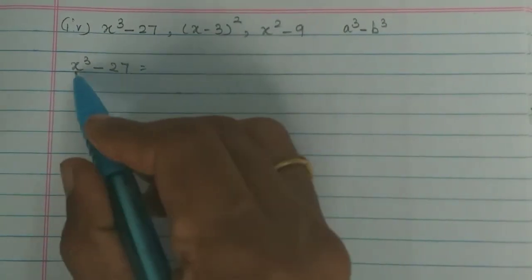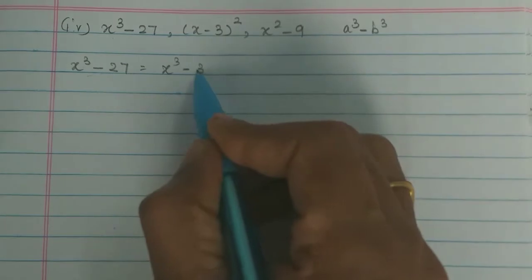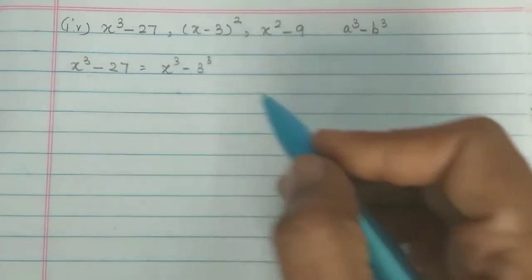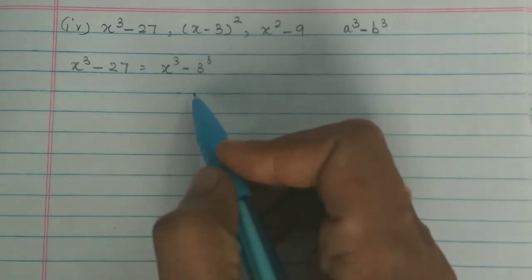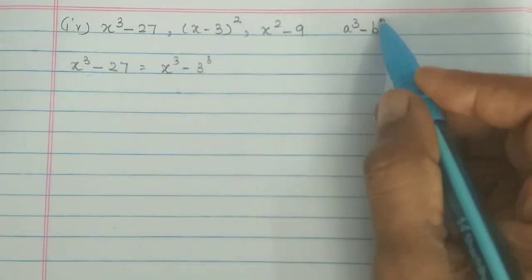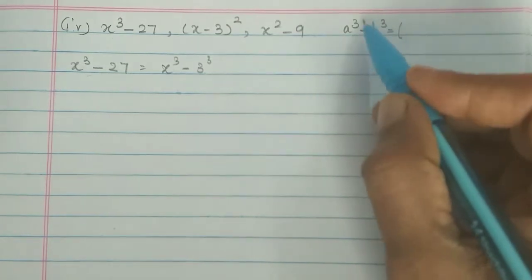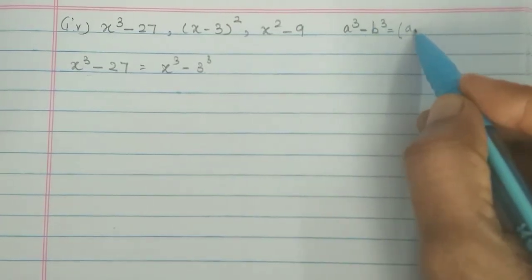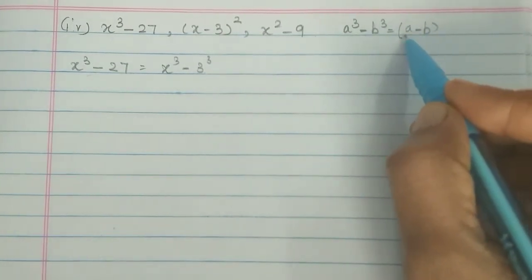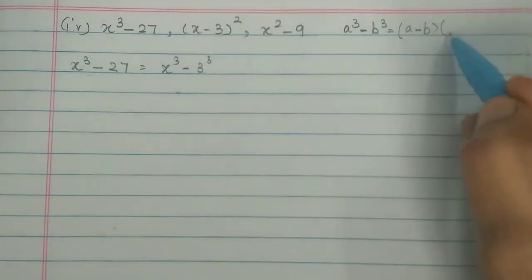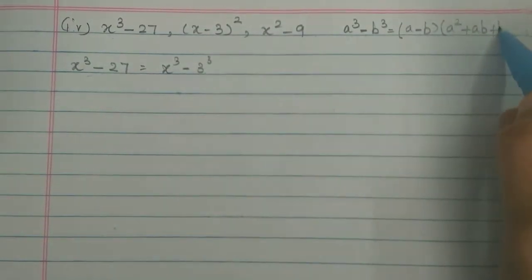For x³ - 27: x is cubed, and 27 = 3³ (since 3×3×3 = 27). So this is a³ - b³ where a = x and b = 3. The formula is a³ - b³ = (a-b)(a² + ab + b²).